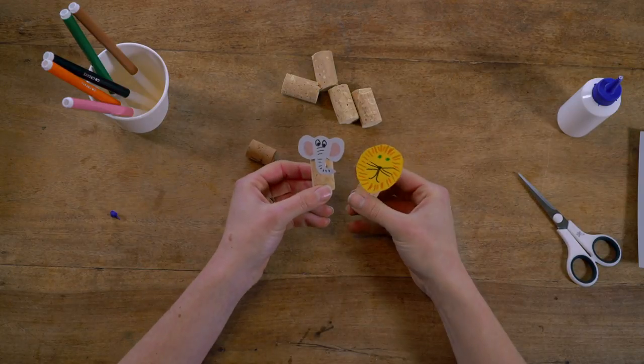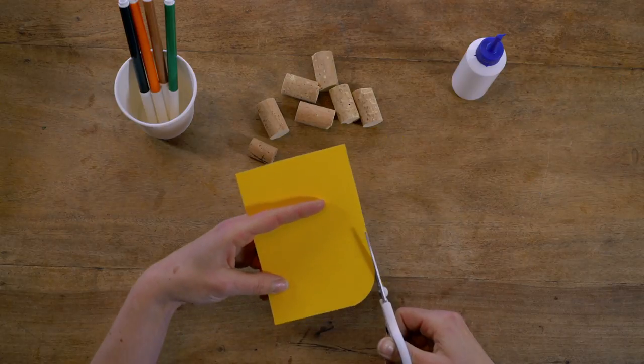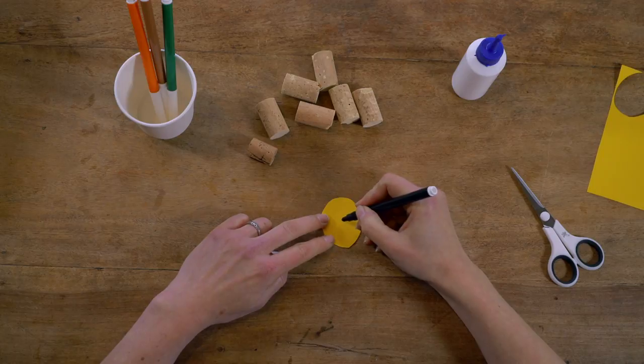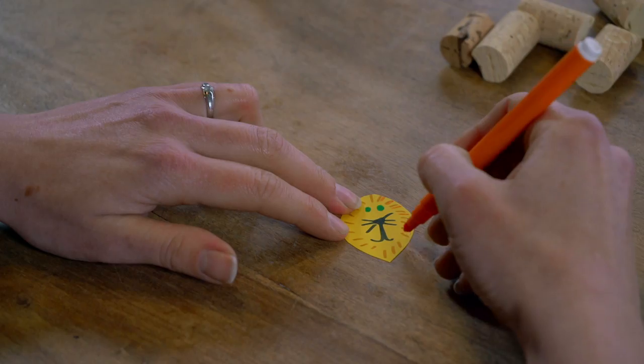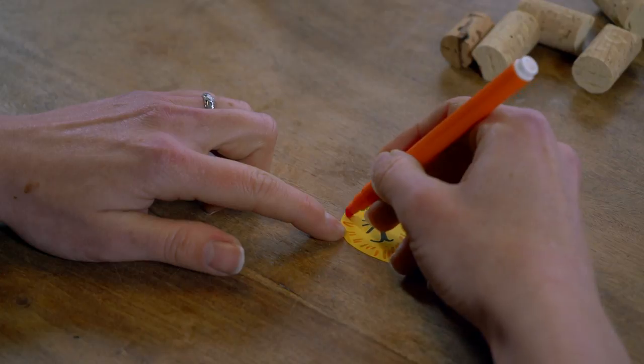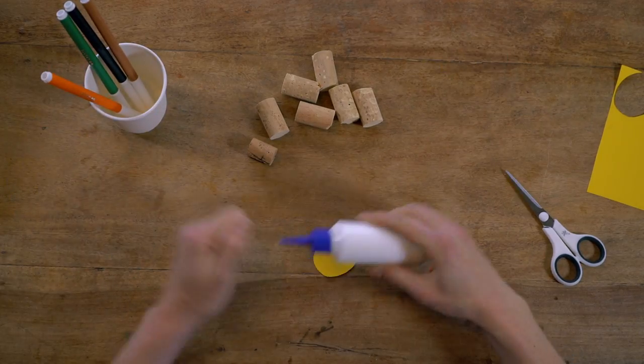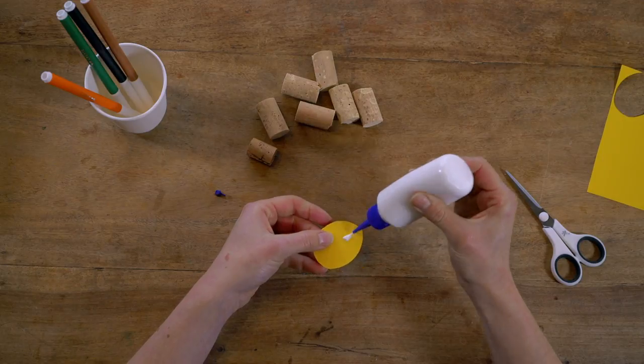Or why not use your old corks to create these animal counters. We're using some scrap card to make animal heads. Use your felt tip pens to draw on some details. Then simply add some glue to the back of the card and put it onto the cork.